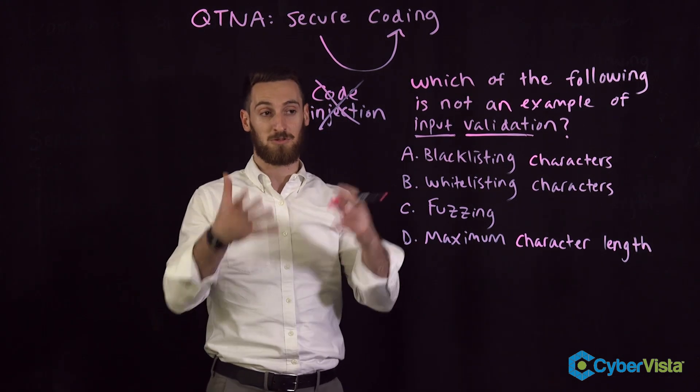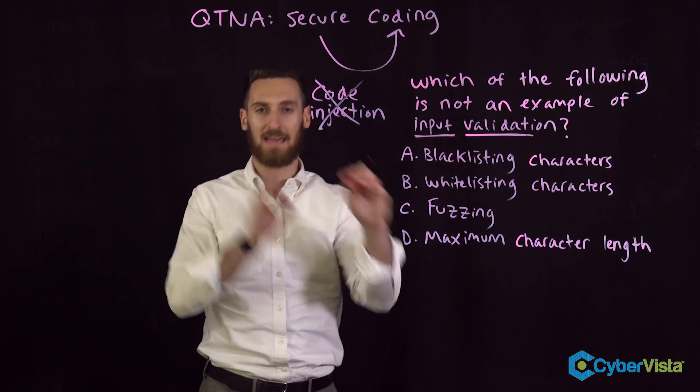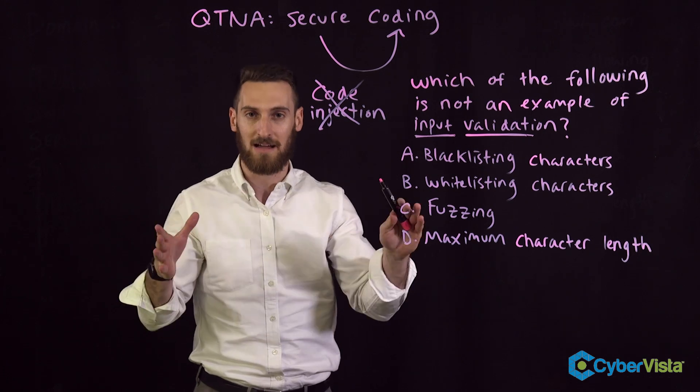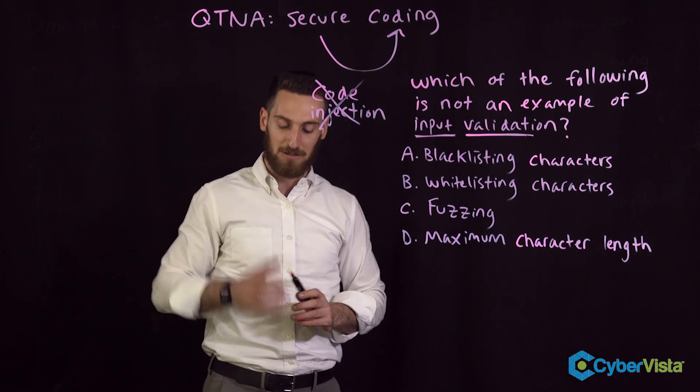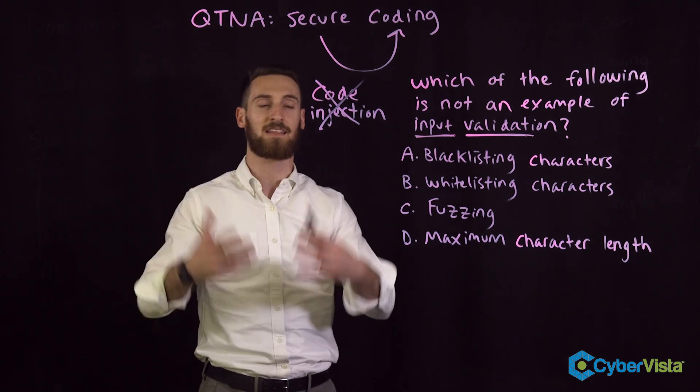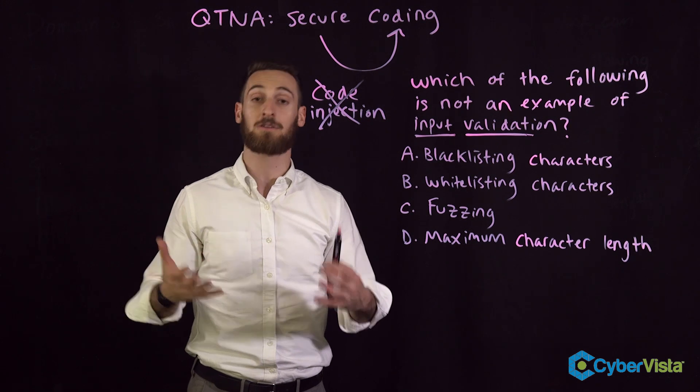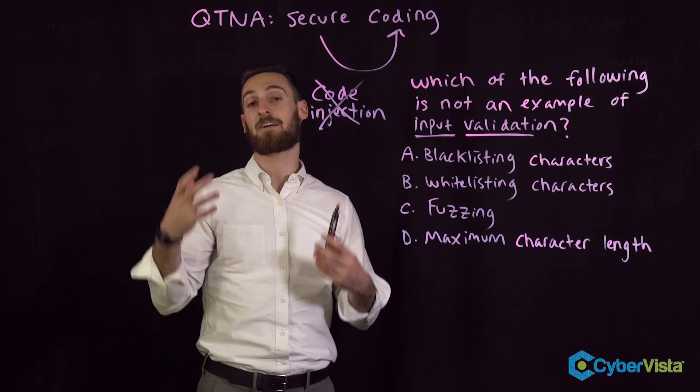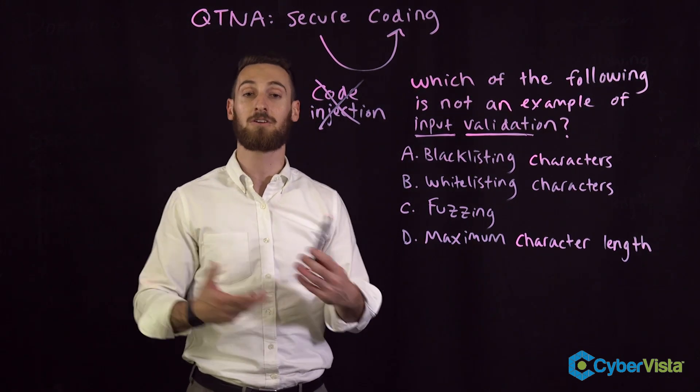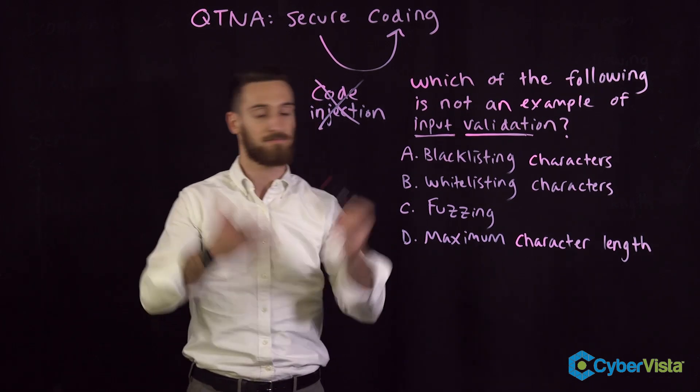Blacklisting is when you, just what it sounds like, basically say these specific characters in our input are not allowed. I'll give you an example. You don't have to be a SQL database admin to understand this. SQL is a very common language we use to query databases. There is a very specific character you're going to use when carrying out a SQL injection attack.